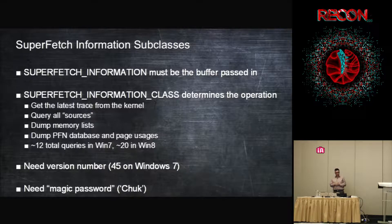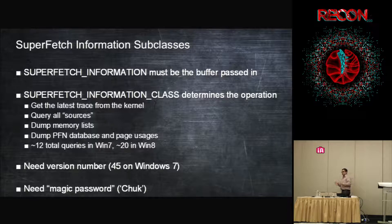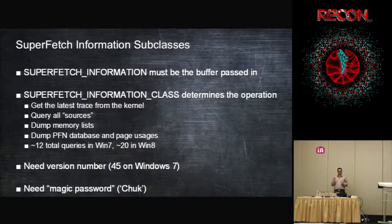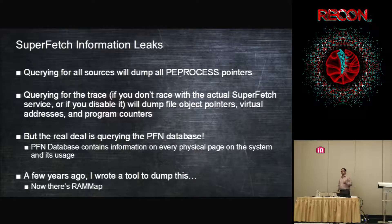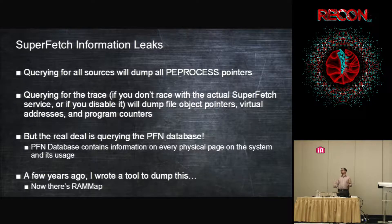SystemSuperfetchInformation has subclasses inside it. You get a structure called SUPERFETCH_INFORMATION with a SuperfetchInformationClass. This lets you mess with page priorities, get a trace from the system with all page faults, get all the sources (process pointers), and dump all the page databases. There are about 12 subclasses in Windows 7, 20 in Windows 8. These need a version number — currently 45 — and a magic password: 'CHUK'. If you pass in 'CHUK' as the first parameter, it works; otherwise you get access denied.